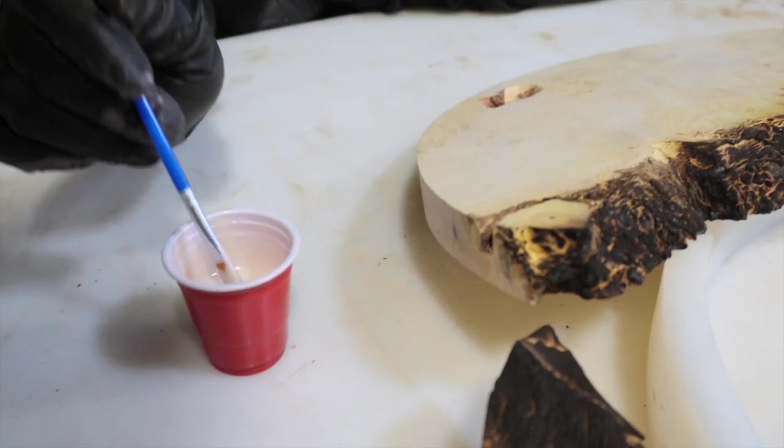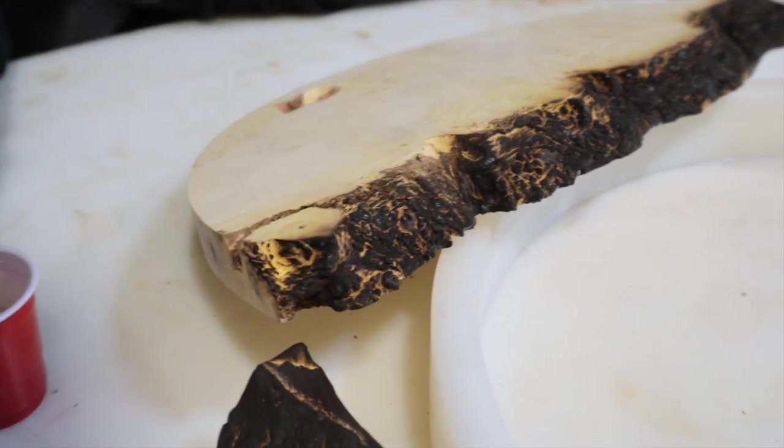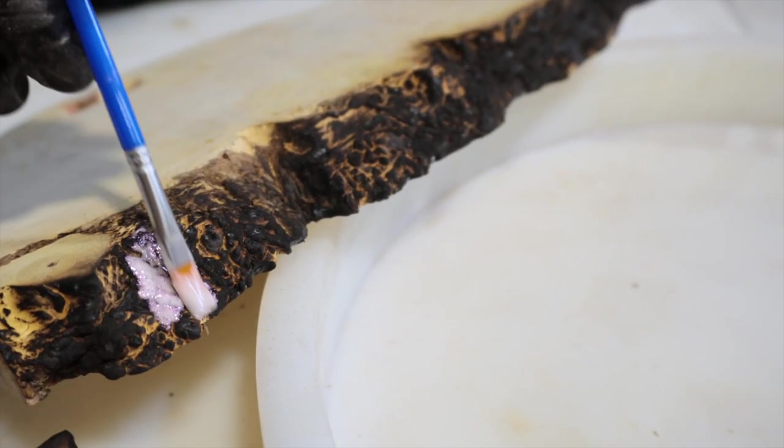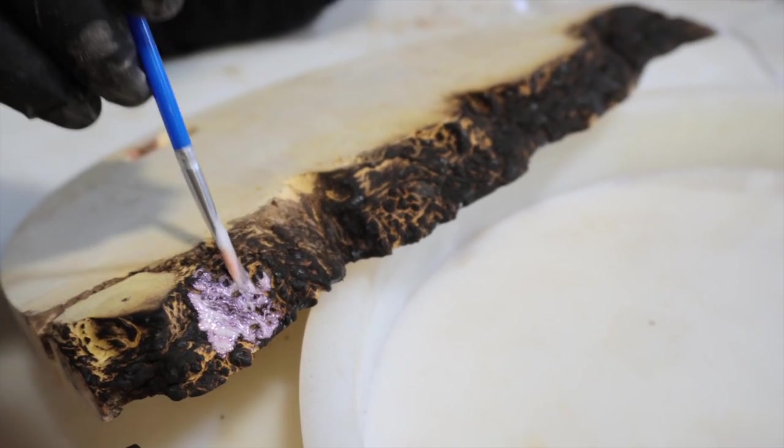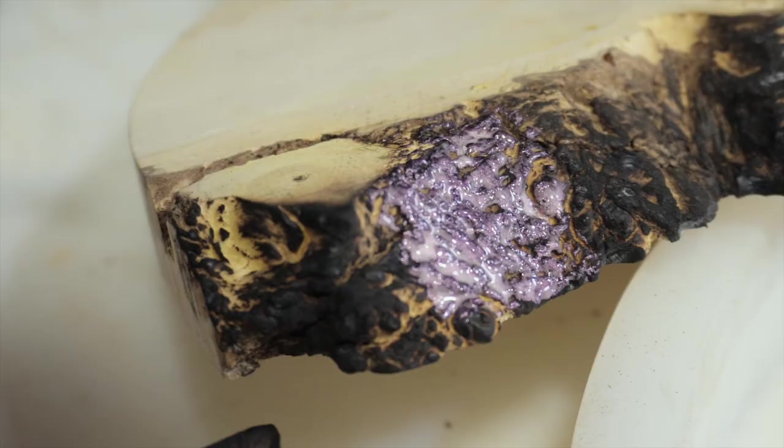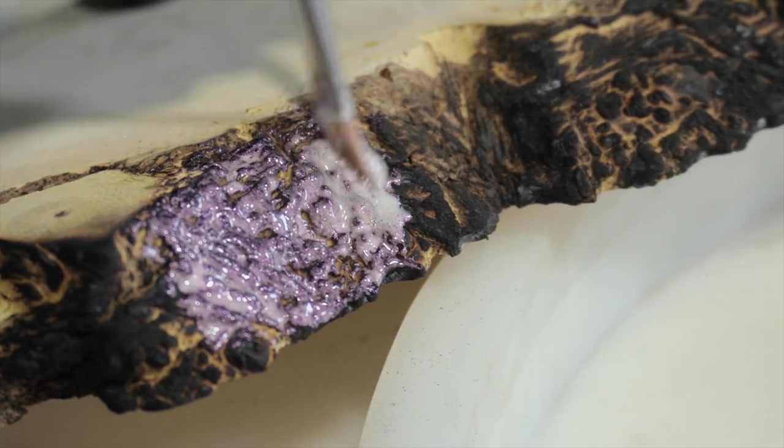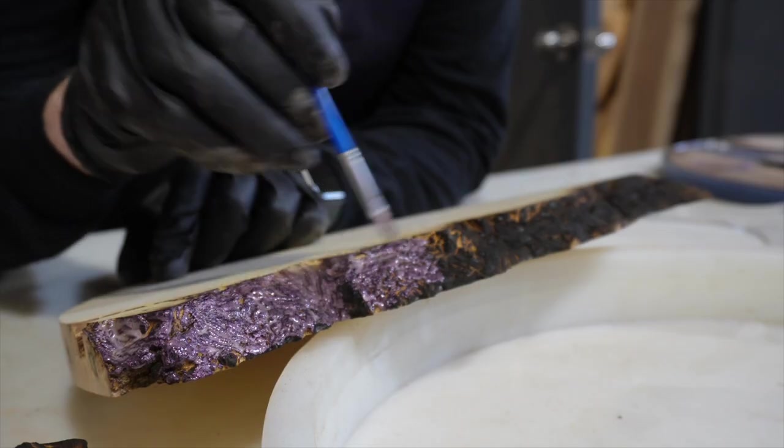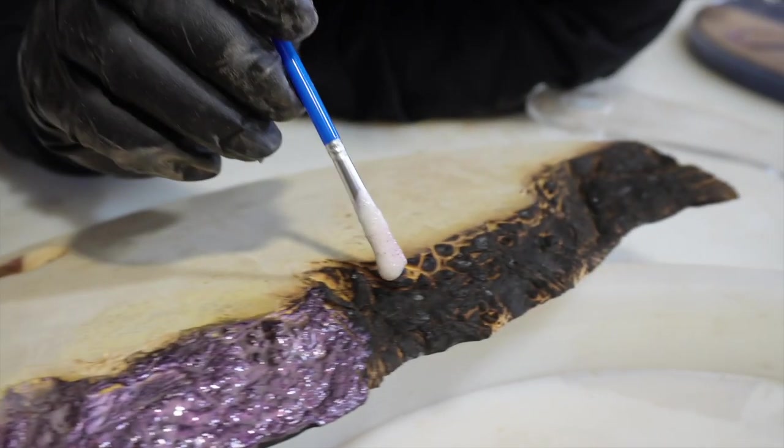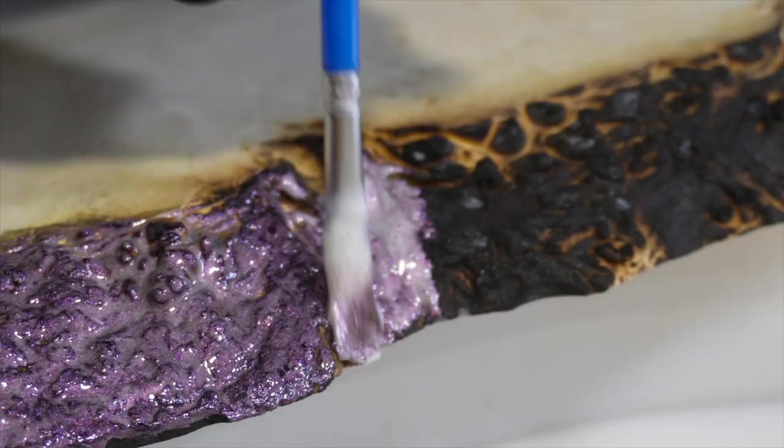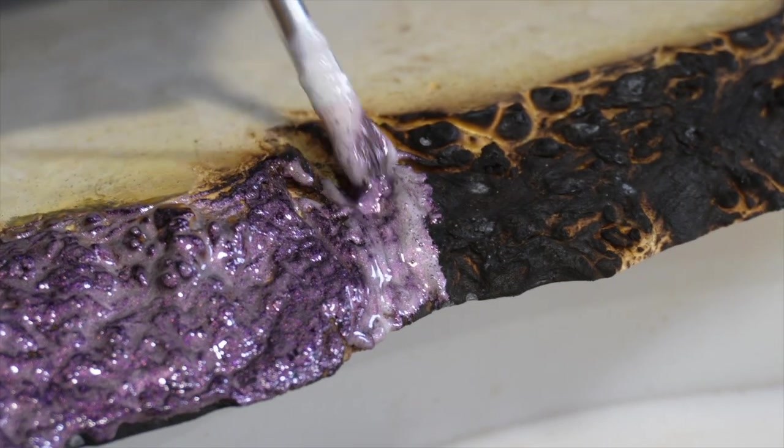Now there's no right or wrong way to do this. You can kind of use as much or as little as you want, but you'll really see the color pop once you apply it over that burnt edge. It's deceiving when you first mix up that pigment. It just looks kind of white or beige, and after you apply it over that dark edge in a thin layer, you really see that color pop.